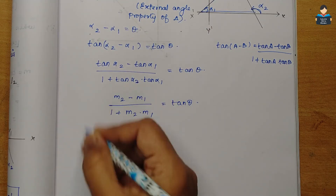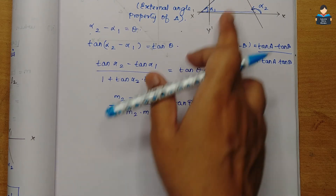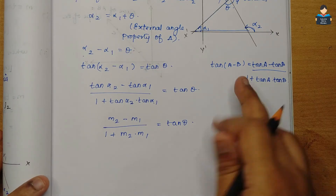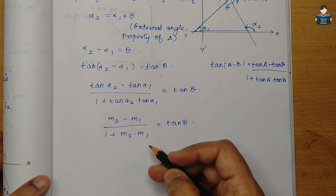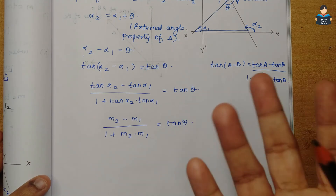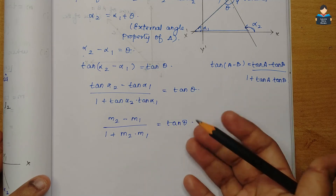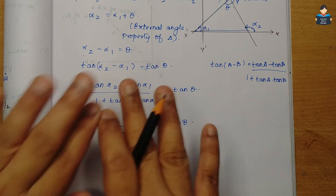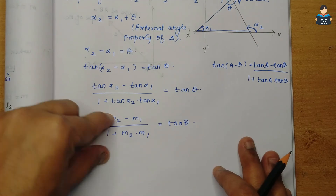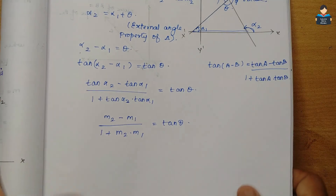For the acute angle, the value is positive, and for the obtuse angle, the value is negative. So the formula for the angle between two lines is tan theta equals M2 minus M1 over 1 plus M1 times M2.